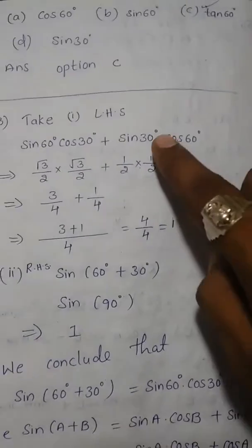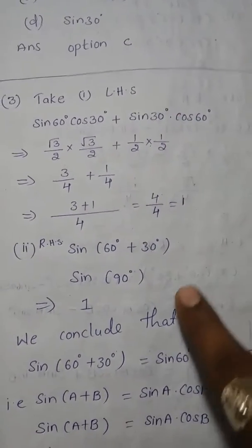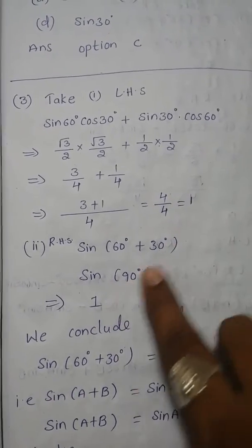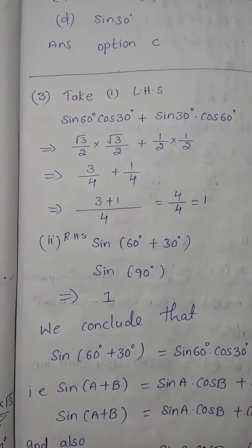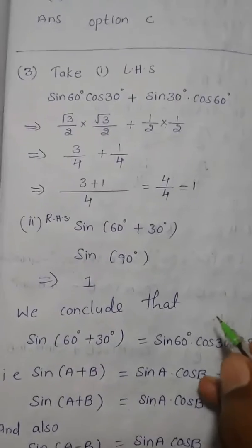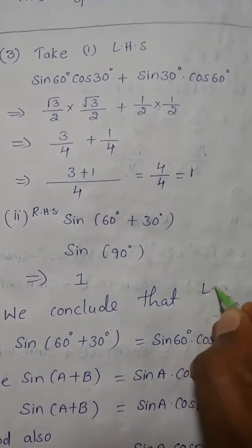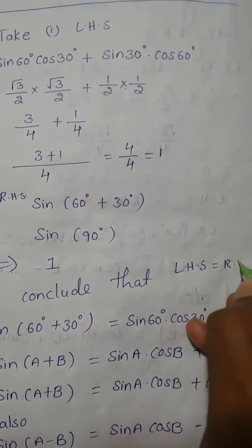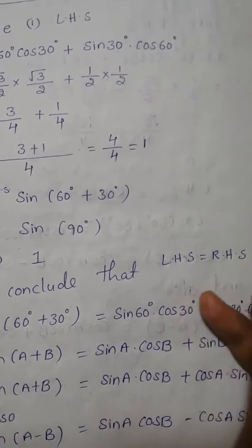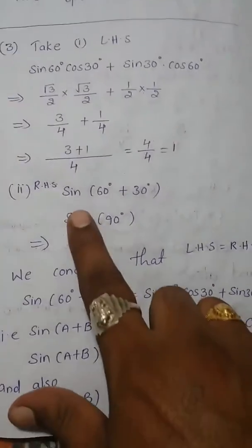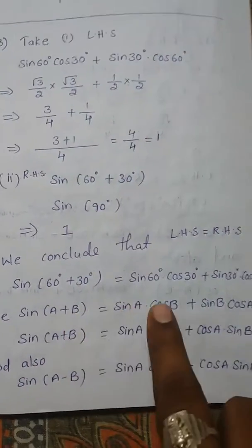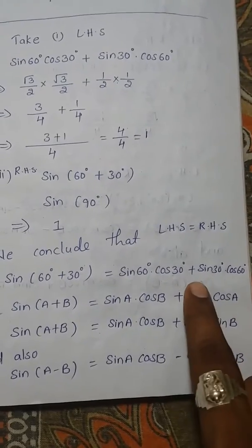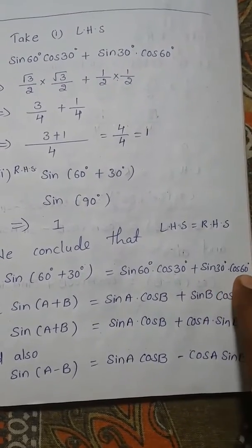Observing both sides, the left-hand side equals 1 and the right-hand side equals 1. Therefore, LHS is equal to RHS. We can conclude that sin(60+30) = sin60·cos30 + sin30·cos60.